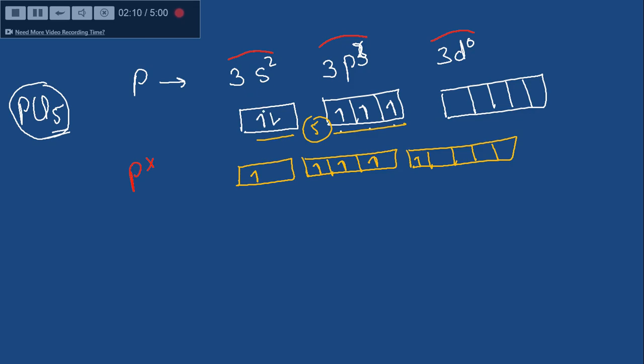So, because now these orbitals overlap to become of similar energy, first they will all get singly occupied, and then only, if possible, the pairing will take place. So as per the new distribution of electrons, now there are 5 unpaired electrons with which 5 chlorine atoms will easily form 5 bonds.